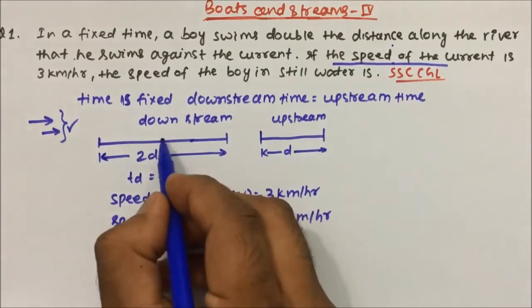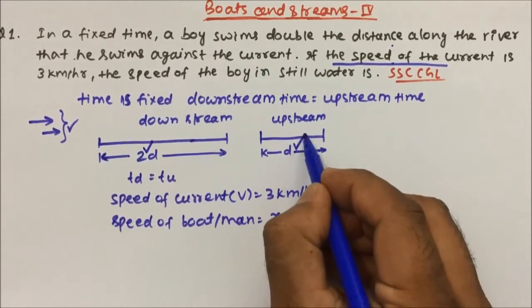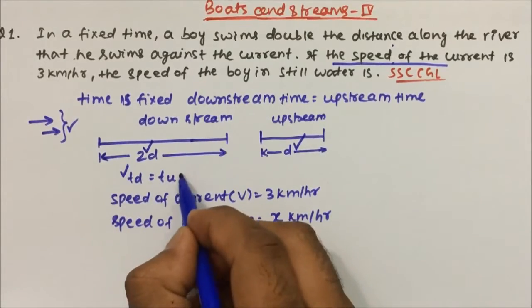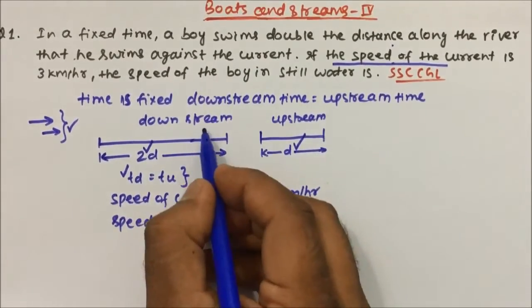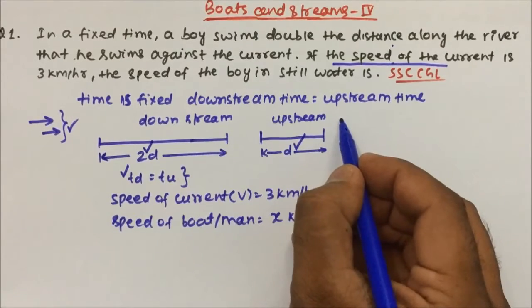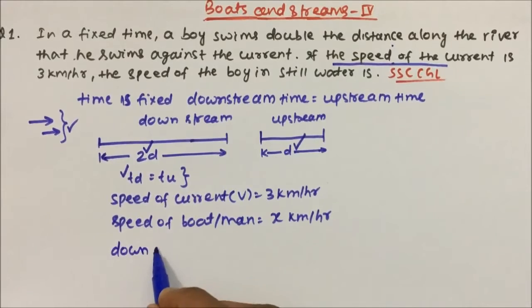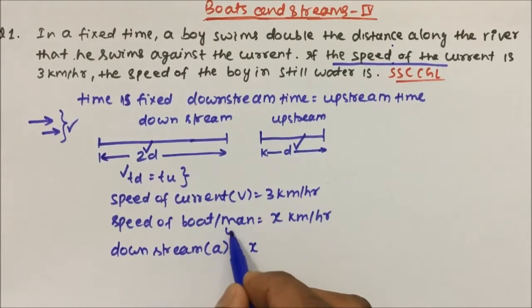So downstream distance is 2d, upstream distance is d, and time is the same for both. Now we need to find downstream speed and upstream speed. Downstream speed is denoted as a, where a = u + v, i.e., speed of the boat plus speed of the stream, so a = x + 3.